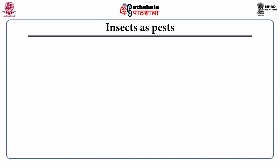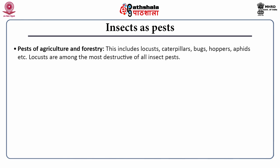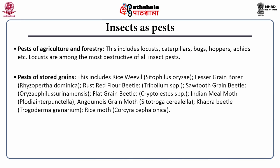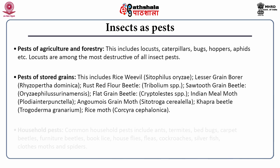Insects are also harmful; insects as pests are a serious menace to society and agriculture. Pests of agriculture and forestry mostly include those from Lepidoptera and Dipteran orders, as well as locusts, bugs, hoppers and aphids. Locusts are among the most destructive of all insect pests. Pests of stored grains include rice weevils, grain borers, rust red flour beetles, flat grain beetles, Indian meal moths, and khapra and rice moths. Household insect pests include ants, termites, bedbugs, carpet beetles, furniture beetles, booklice, houseflies, cockroaches, fleas, silverfish, cloth moths and spiders.